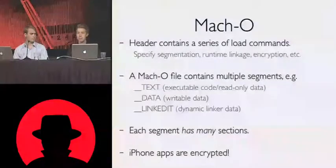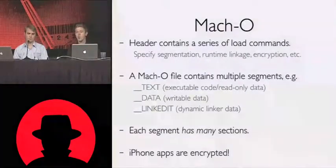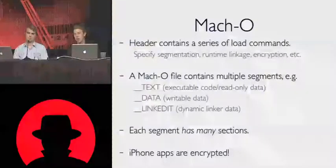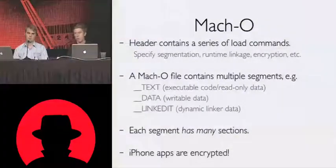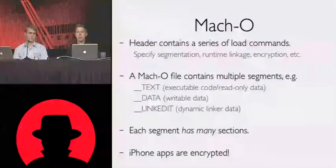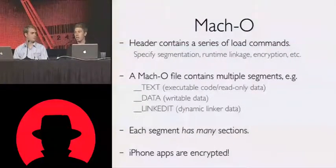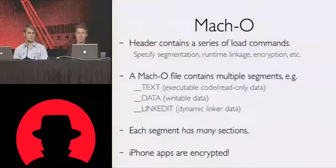The Mako header has a series of load commands. Load commands specify how the binary is segmented, what sort of libraries we're linking against at runtime, and if there are encrypted sections. Some segments in Mako: text is typically where executable code or read-only constants are located, data is where writable data is, and the link edit table is where we have all of our dynamic linker and symbol data.